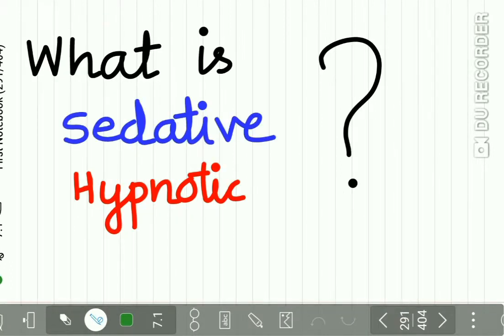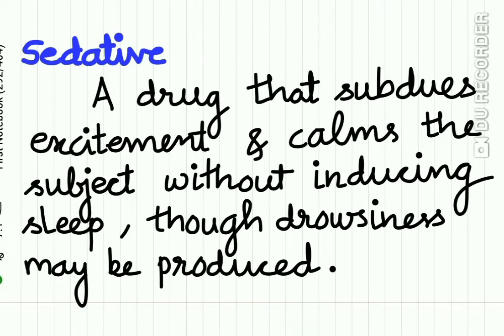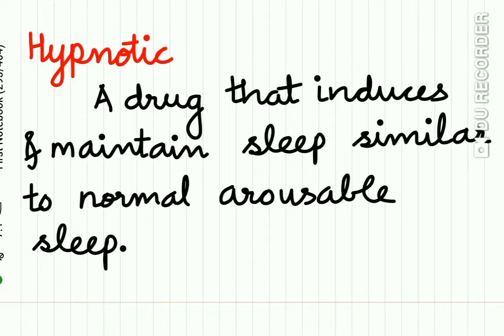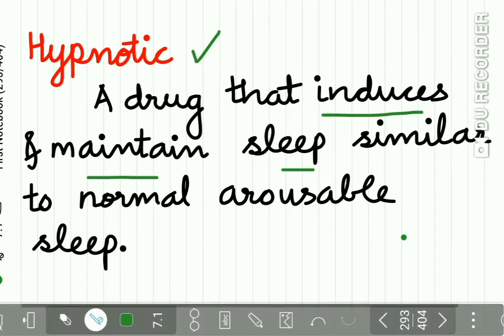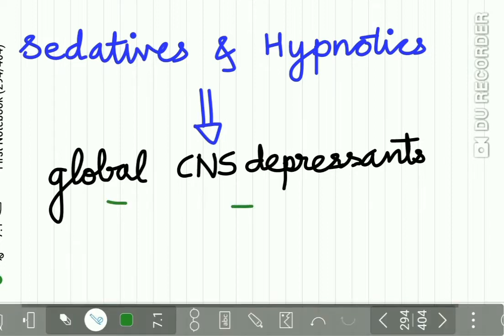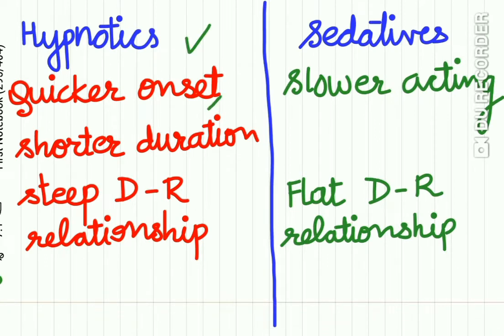Starting with the basics: what is a sedative and what is a hypnotic? A sedative is a drug that subdues excitement and calms the subject without inducing sleep — this is very important — though drowsiness may be produced. A hypnotic is a drug that induces and maintains sleep similar to normal, arousable sleep. Sedatives and hypnotics are considered global CNS depressants. Hypnotics have a quick onset of action, a short duration of action, and a very steep dose-response relationship, while sedatives are slow-acting and have a flat dose-response relationship.